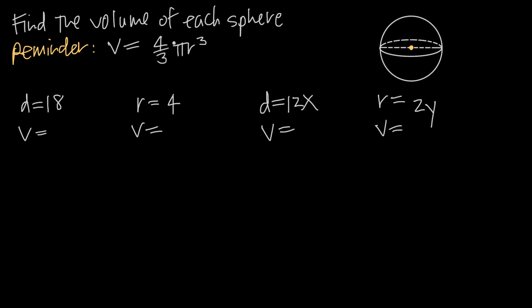So all we need to know in order to find volume is going to be the radius of the sphere. And remember that the radius is just going to be that section from the very center of the sphere to its outer edge. So this section right here, that'll be the radius. The entire section all the way across will be the diameter.